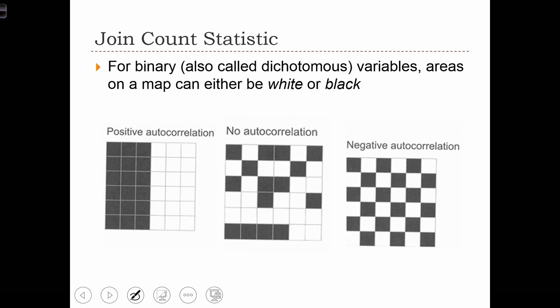And when we do that, the join count statistic is going to be able to detect something called autocorrelation. I'm going to define autocorrelation in a later lecture, but for now it suffices to say that positive autocorrelation is a map pattern similar to what we've been calling clustering. Negative autocorrelation pertains to map patterns that seem to be uniform or dispersed.